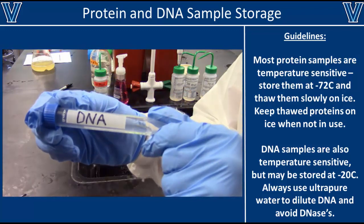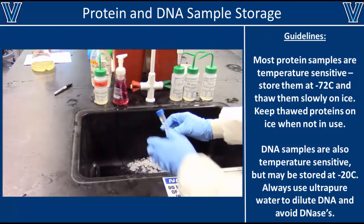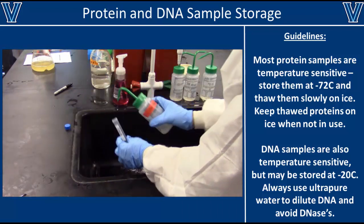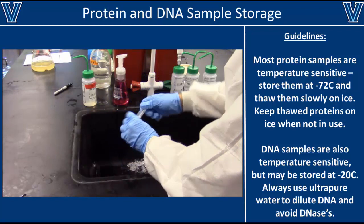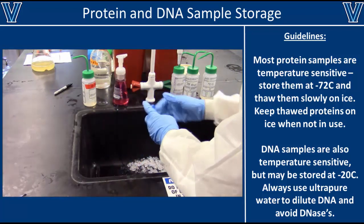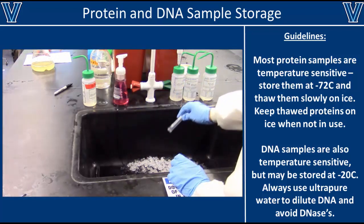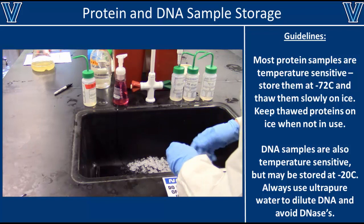If you ever need to dispose of any samples containing DNA, they must be degraded first with 10% bleach before pouring them down the drain. This is to prevent the spread of any antibiotic resistance genes to the environment. Simply add 10% bleach to your DNA sample in a 1-to-1 ratio, shake it around a bit, incubate it, and then you can pour it down the drain. To review: never thaw protein or DNA samples at high temperatures — instead, thaw them on ice or at room temperature. Once you are done with proteins, freeze them at negative 72°C. While working with any proteins, keep them as cold as possible to prevent denaturing. Once done with DNA samples, freeze them at negative 20 or negative 72°C. Try to avoid DNA contamination — do not sneeze into your samples and don't use contaminated buffers.